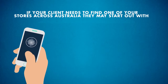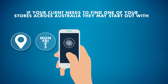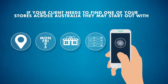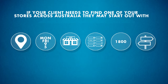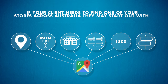For example, if your client needs to find one of your stores across Australia, they may start out needing to find the location, see the opening hours, review a photo of the location to check it looks as expected, see menu or stock availability, get easy access to a phone number to confirm they're not wasting their time, and gain easy directions. All of this indicates that one of the most important channels would obviously be Google Maps.